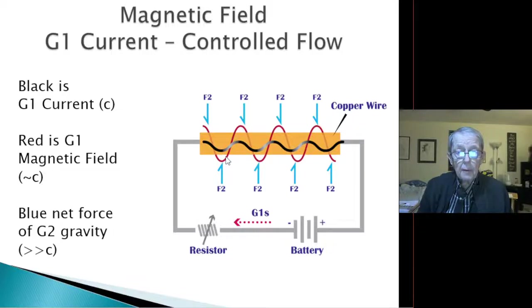So I assume then that it wasn't a straight line, but that the G1 current, which is black, moved in a spiral. Well, that gave the possibility for the magnetic field to move in a spiral. And so I'm assuming that that magnetic field is the release of G1s, and they get trapped by G2 gravity to keep it moving in a circle, as Orsted had indicated. Red is the G1 magnetic field, and blue the net force of G2 gravity.